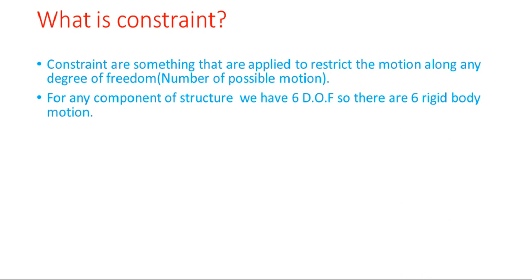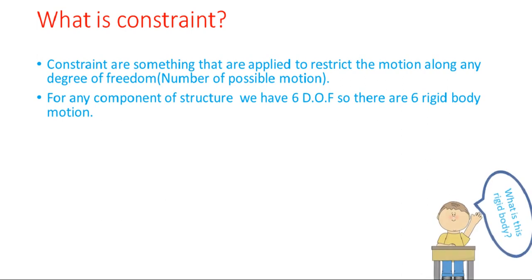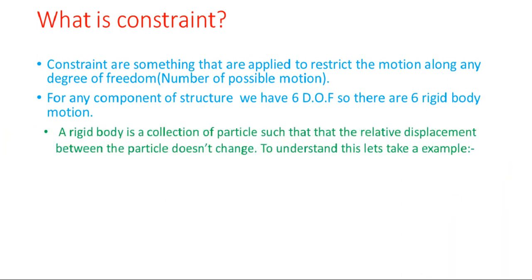For any component of a structure we have six degrees of freedom, and six degrees of freedom means there are six rigid body motions. Now you might wonder: what is rigid body motion? A rigid body is a solid body in which deformation is zero, or so small it can be neglected. The distance between any two given points on a rigid body remains constant in time, regardless of external forces exerted on it.